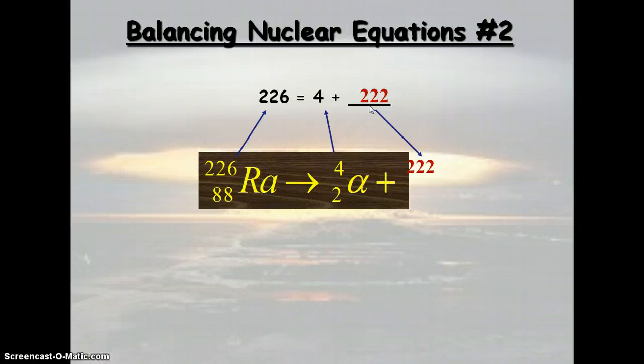Now let's look at the proton number of the unknown. We have 88 equals 2 plus x. So that'd be 86.